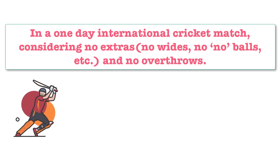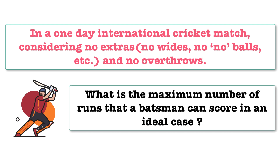The problem statement says that in a one-day international cricket match, considering no extras, no wides, no no-balls and no overthrows, what is the maximum number of runs that a batsman can score in an ideal case? In a one-day international cricket match, considering no extras, no wides, no no-balls and no overthrows, what is the maximum number of runs that a batsman can score in an ideal case?